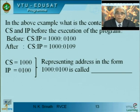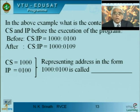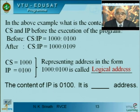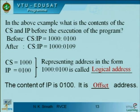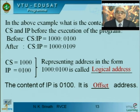Representing an address in the form 1000:0100 is called the logical address — just to recall what was studied earlier. The content of the instruction pointer, 0100, is called the offset address. You cannot forget the fundamentals; these are regularly used throughout the course.